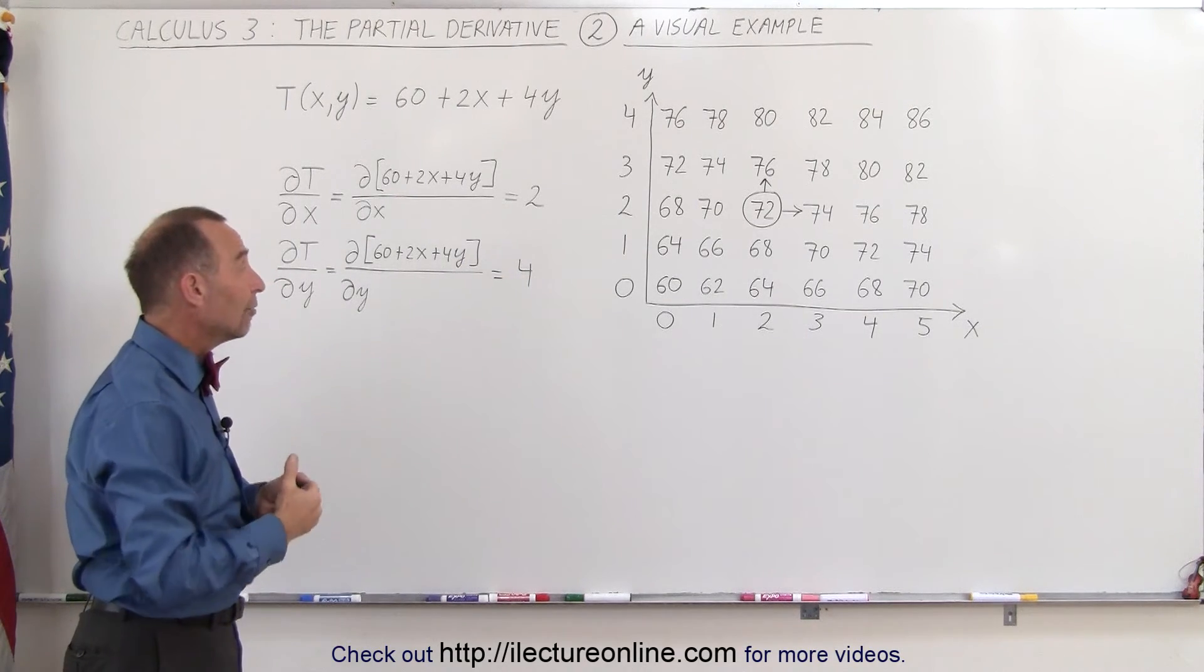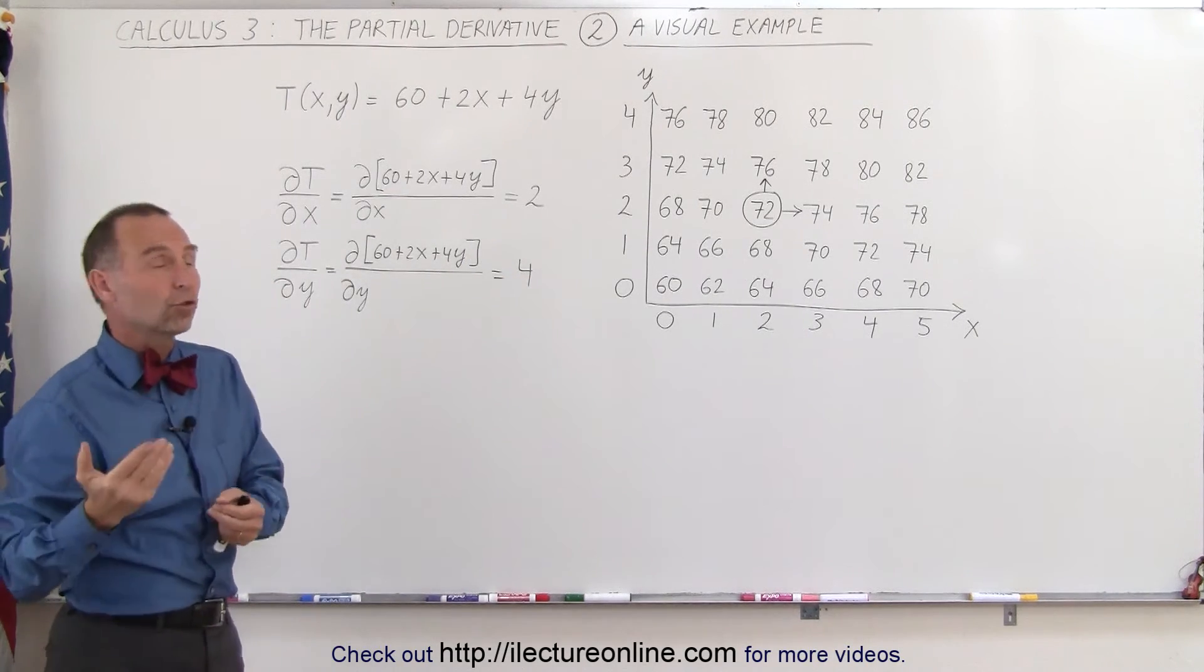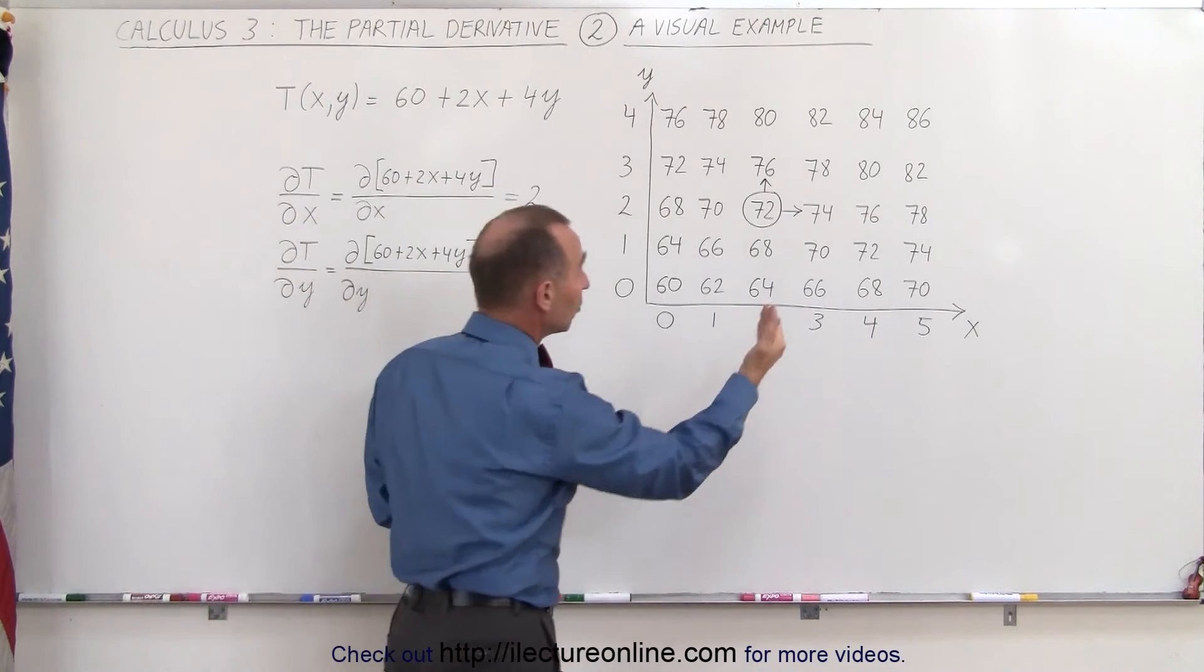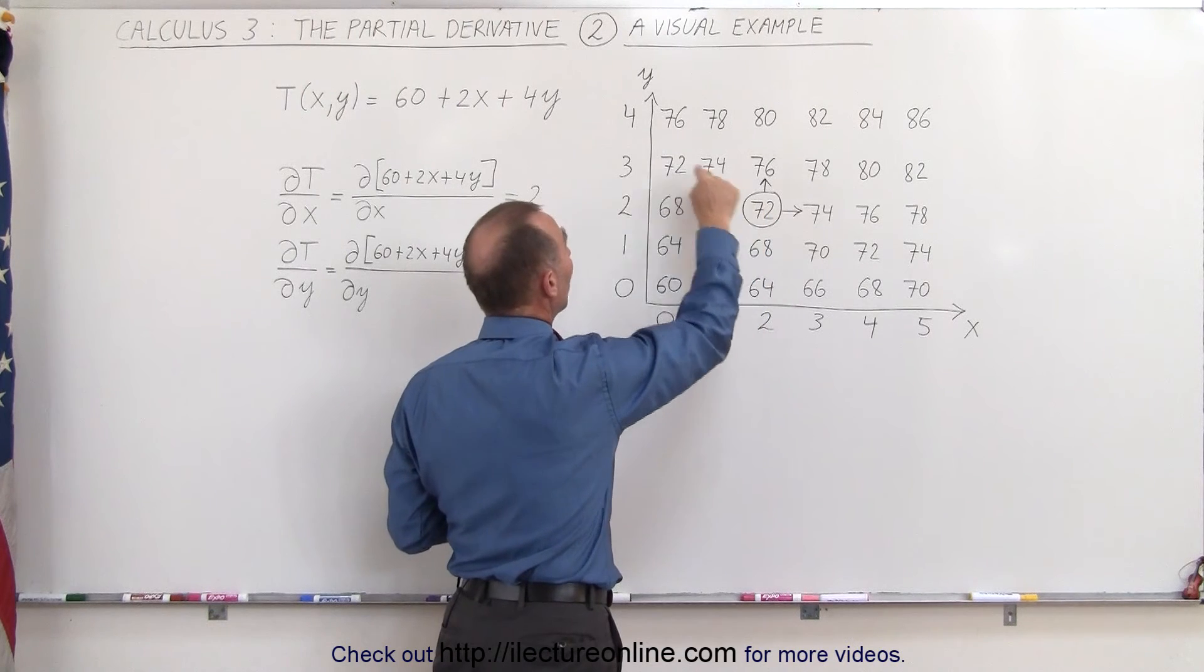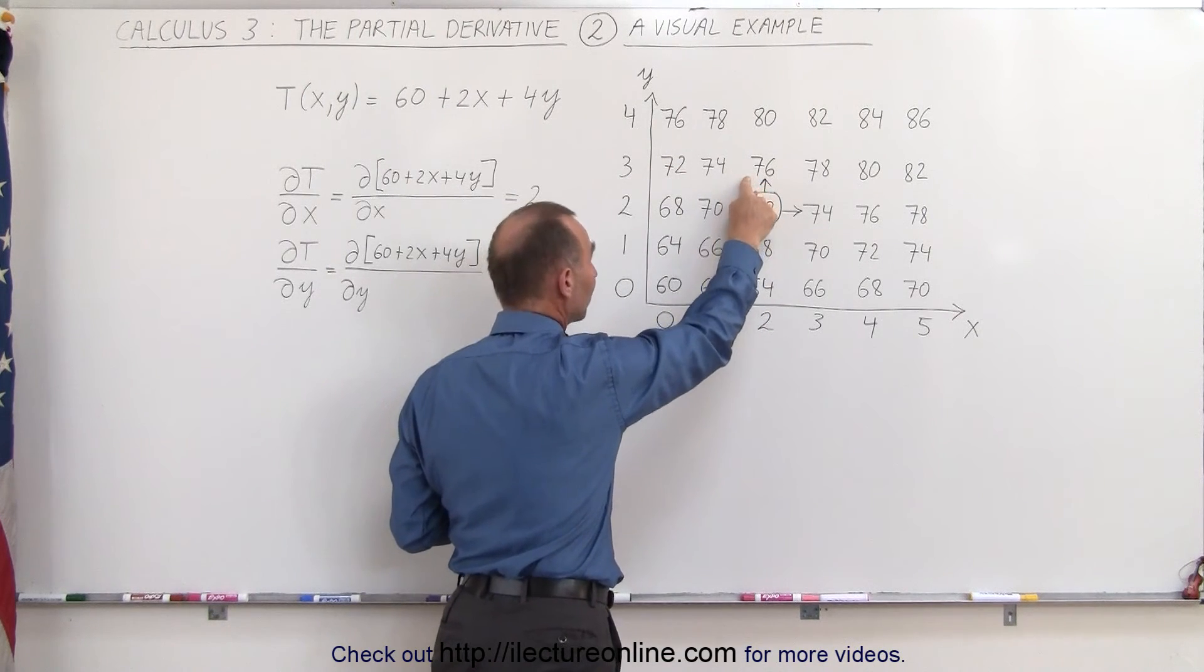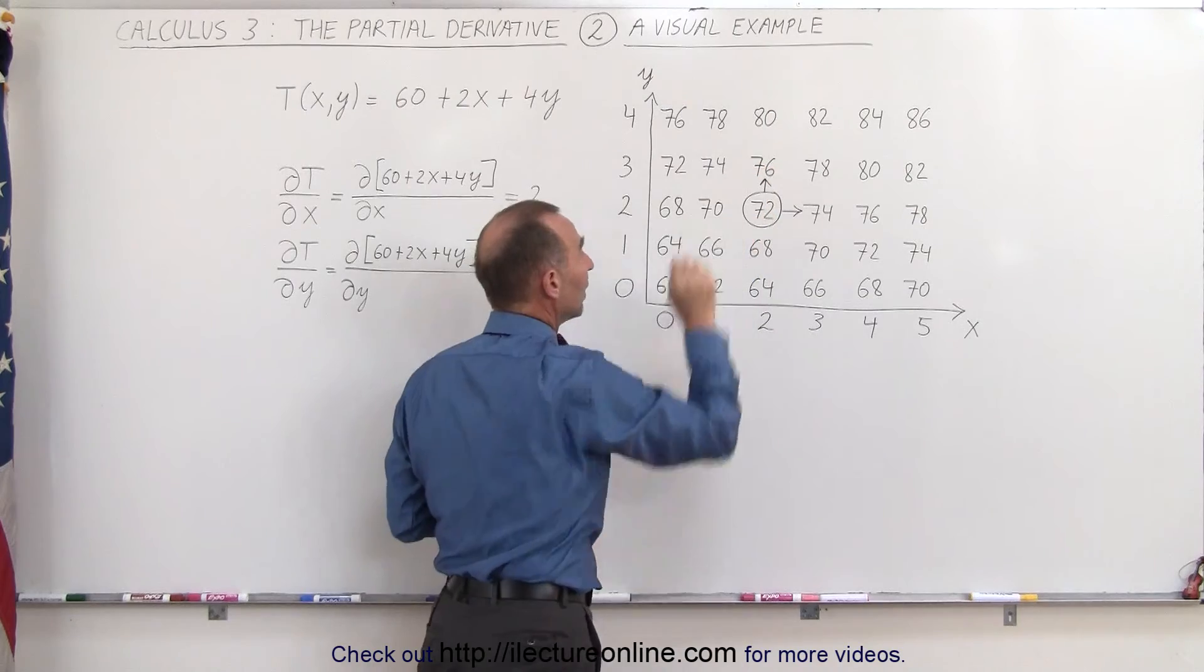Now here we can say that if y changes by 1 unit, the temperature changes by 4 units. And if you go check that here, you can see that if we go from y equals 2, where it's 72 degrees, to y equals 3, it becomes 76 degrees, which is 4 degrees warmer than 72.